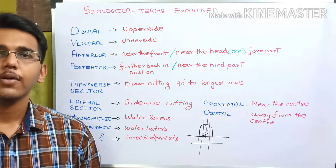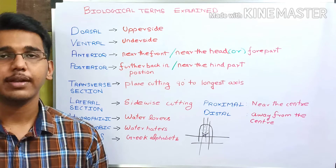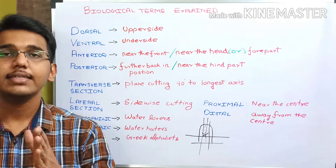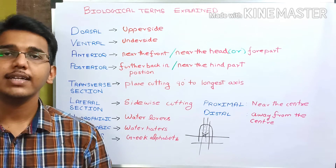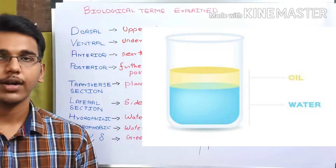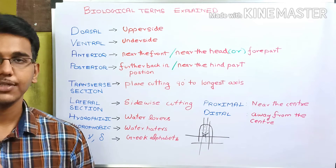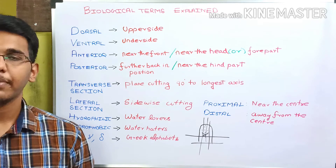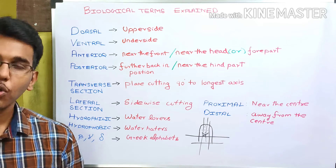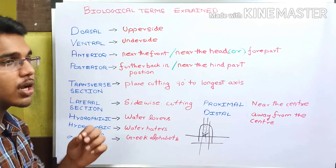Why are hydrophobic molecules not able to interact with water molecules? Because nature favors only energy-favorable reactions — we must provide external energy to make this interaction possible. For example, if you pour oil into a beaker of water, they remain separate. But when the beaker is heated, blending occurs to some extent, showing that external energy can enable interaction between hydrophobic molecules and water, at least partially.